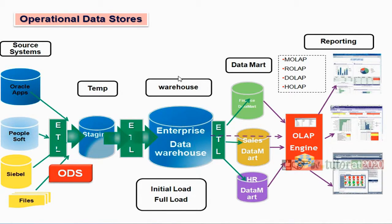In the top-down approach, one small problem is: if you want to see a report, first you need to load into staging, then from staging to the data warehouse, data warehouse to the data mart, and then the report. So many phases you have to undergo. If your servers are not high-end and your server capacity is not great, then it will take time to move through each phase. If you want to see a report very quickly, you need to wait for all these phases with slow processing.